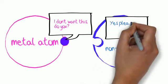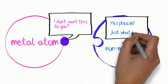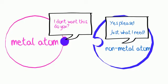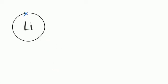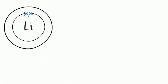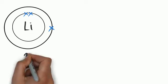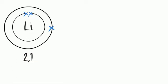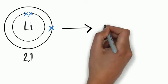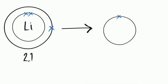The metal atom donates its outer electrons to the non-metal, which receives electrons into its outer shell. So why do they do this? Because they want to obtain the electron configuration of a noble gas — that's what's driving this. All atoms want to obtain the same electron configuration as a noble gas, and that's basically why they react.